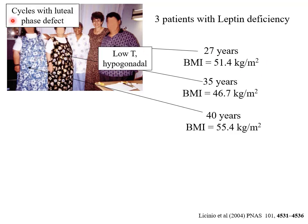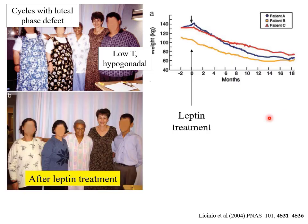What's wrong with them? The two women are infertile and don't go through normal cycles, and the man has very low testosterone and is in fact hypogonadal — almost as though he hasn't gone through puberty. If you treat them with leptin, what happens?